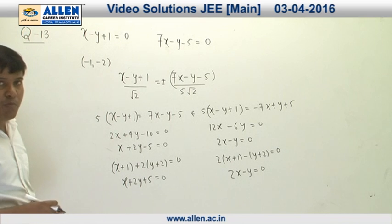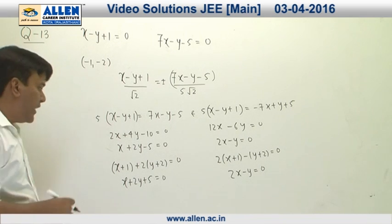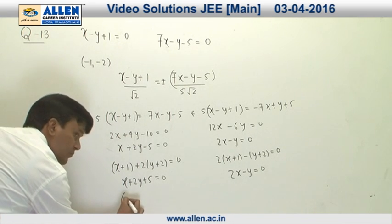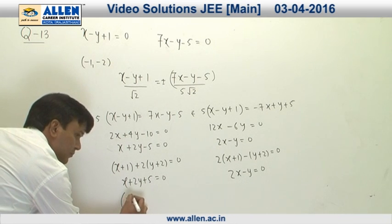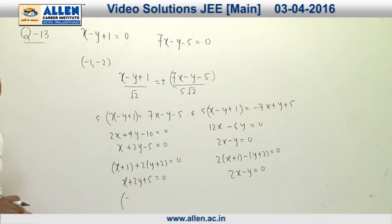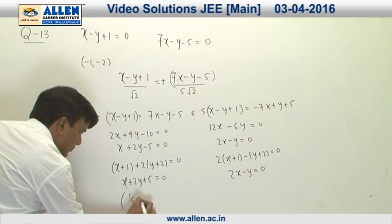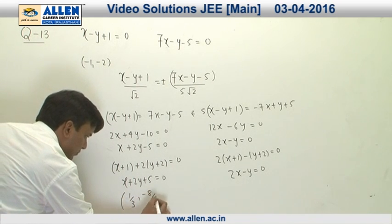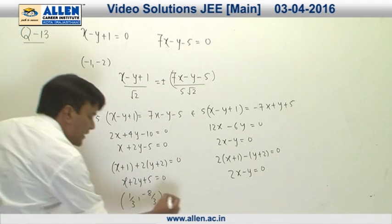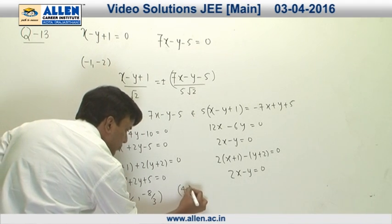Now we have to verify which of the points in the options lies on the diagonal, and we can see the fourth option, given by (1/3, -8/3), lies on this line. Hence, the answer of this question is 4.